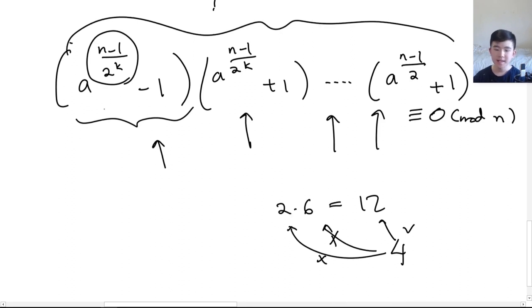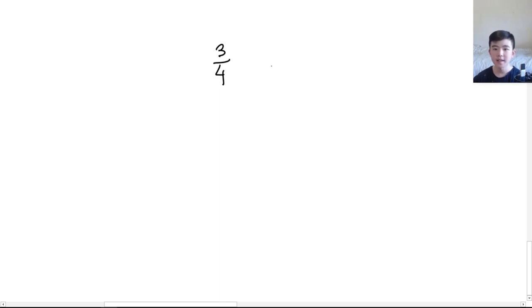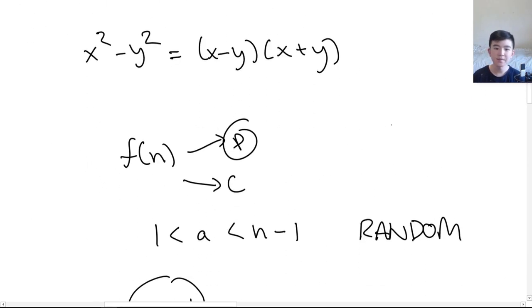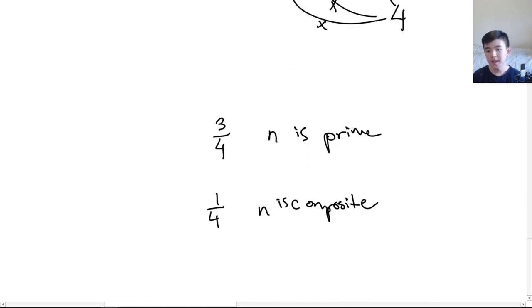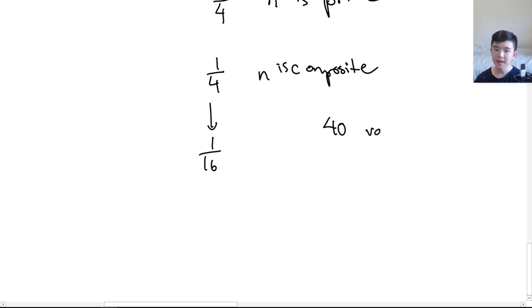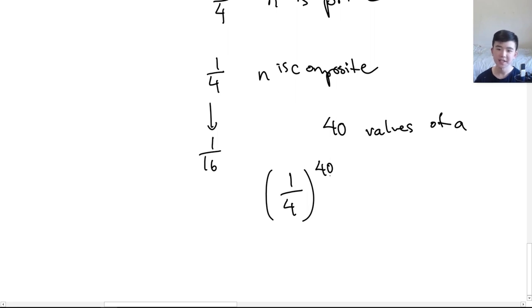If n passes this test there is a 3/4 probability that we are right — that n is actually prime. However, there is a 1/4 probability n is composite. So the test isn't perfect at 75%, but remember we chose a random value of a. If we choose a different value of a, our chance of being wrong drops from 1/4 to 1/16. If we use, for example, 40 values of a, our chance of being wrong goes to 1 over 4^40.